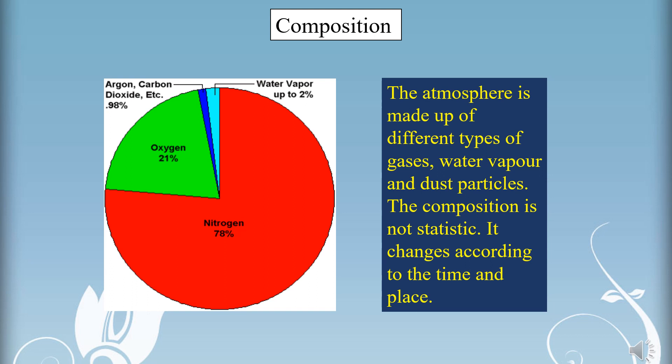Water vapour reaches the atmosphere through evaporation and transpiration. Evaporation takes place in the oceans, seas, rivers, ponds and lakes, while transpiration takes place from plants, trees and living beings.